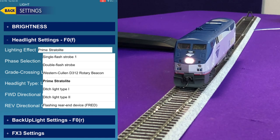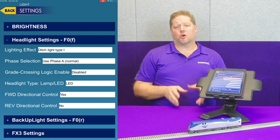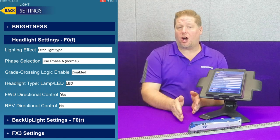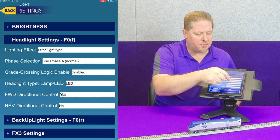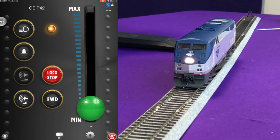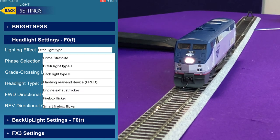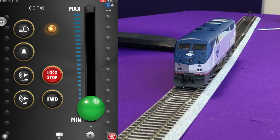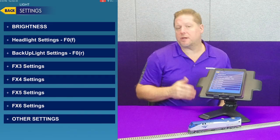Next we have ditch light type 1 and ditch light type 2. Type 1 is on, and when you blow the horn with crossing logic enabled, that lighting effect starts to flash. For type 2, the ditch light is extinguished when crossing logic is enabled, and then when you blow the horn the light starts flashing for however long you set the crossing hold time. That's the difference between type 1 and type 2 ditch light.